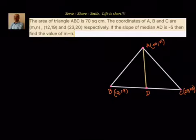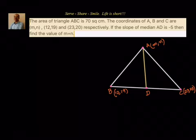Hello friends, welcome back. Hearty welcome to you. Let us look at this interesting example related to coordinate geometry and straight lines. In this example, we have two conditions: one related to the area of a triangle, and another which we are using is given — the slope of a line. So we are using a combination of area of triangle and slope of a particular line in this example.